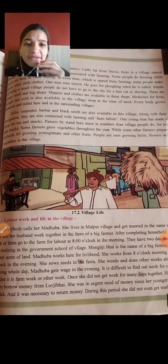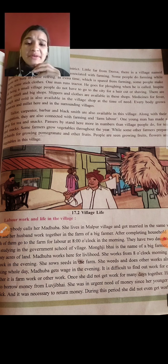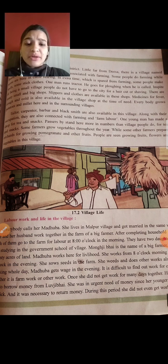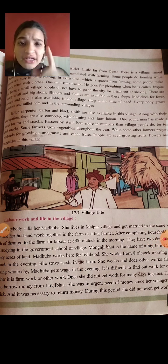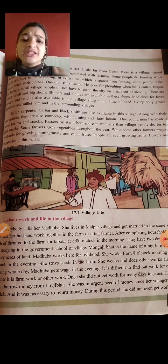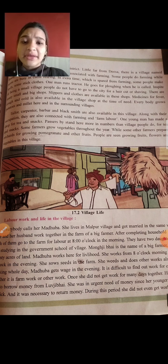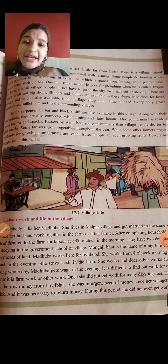Everybody grows millet in the surrounding village. Tailor, carpenter, barber, and blacksmith are all available in this village. A tailor is needed for stitching, carpenter for furniture, barber for haircuts, and blacksmith for tools. Along with their main occupation, they are also connected with farming. So they do farming as well as their extra trade work.